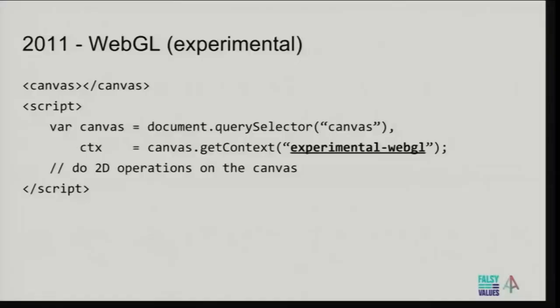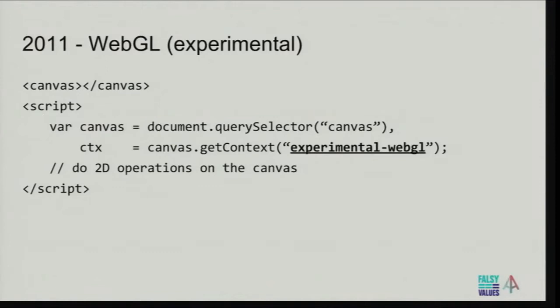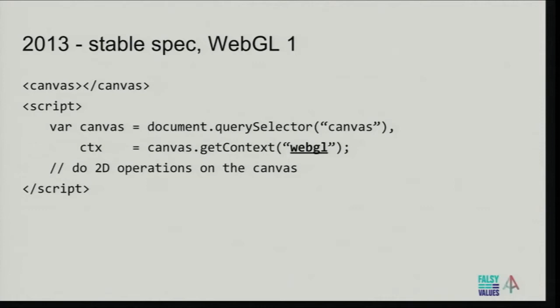Then in 2011, someone realized 2D is nice and fine, but we need a bit more control to actually have performant 3D. With 2D you can also do 3D because all you have to do is basically fake it, but it's not really performant. So in 2011 there was an experimental release of WebGL, and a bunch of browsers supported that and still support it to this day, giving us more powerful 3D operations. In 2013 we finally had WebGL 1 stable, and since then pretty much every browser implements it — including Safari, iOS, and Internet Explorer from version 11 — giving us a stable foundation.